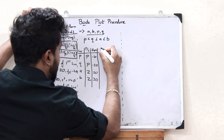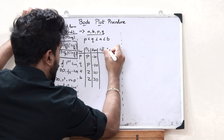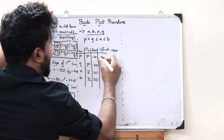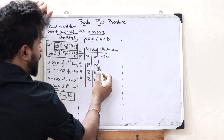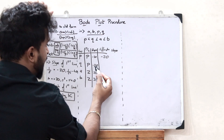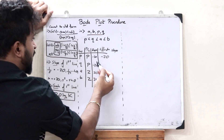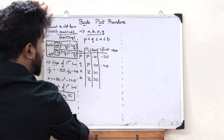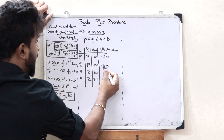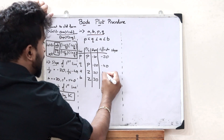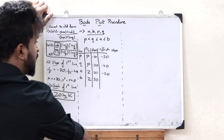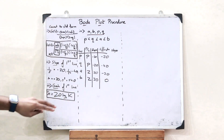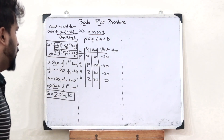Once we have calculated this, we have to find the effective slope. The effective slope starts at −20 dB. Adding the next pole: −20 + (−20) = −40 dB. Then adding the zero: −40 + 20 = −20 dB. And finally: −20 + 20 = 0. This is the effective slope.